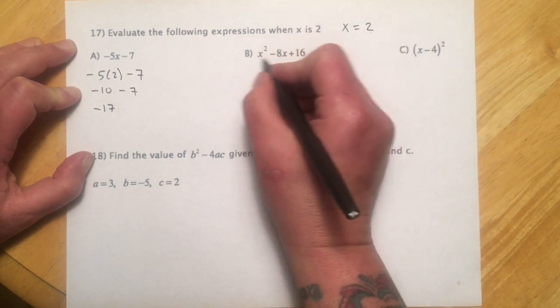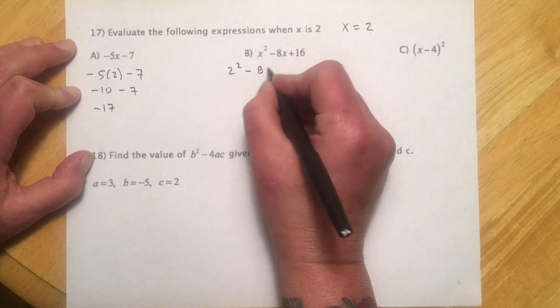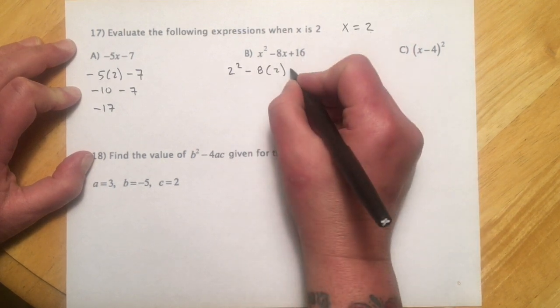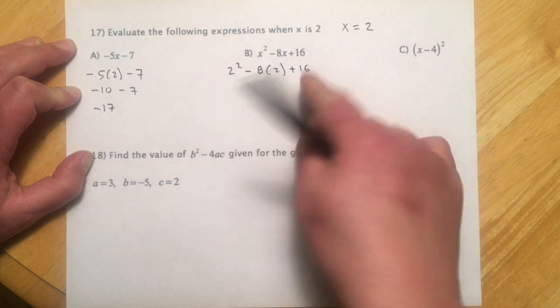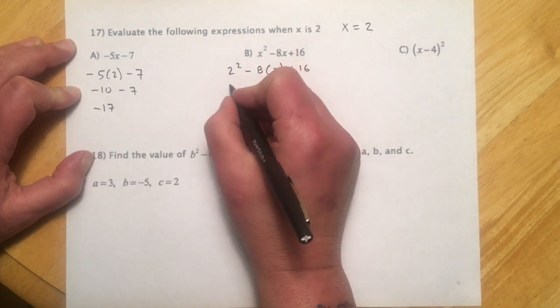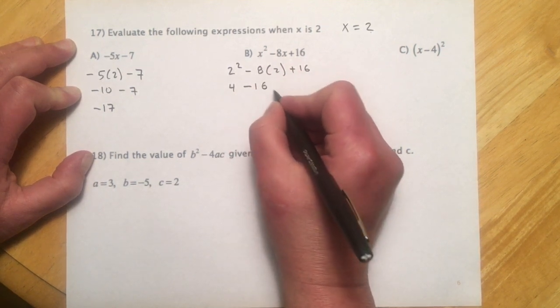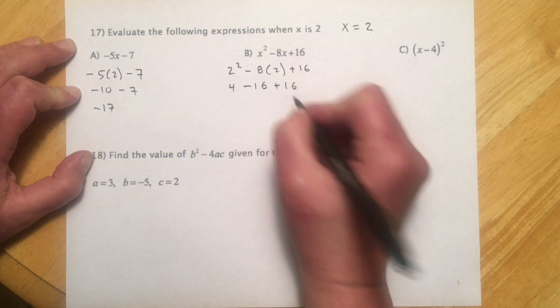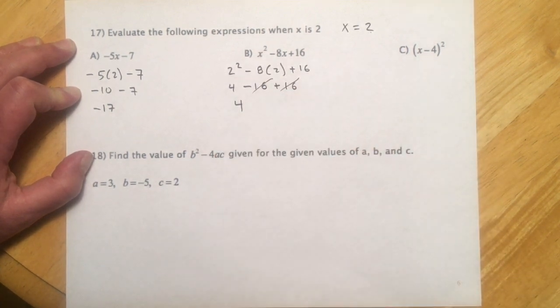Here, again, we'll just put the 2 in. So that will make a 2 squared minus 8 times 2 plus 16. And then just kind of do it using our PEMDAS that we looked at earlier. So 2 squared makes 4. And then 8 times 2 is a minus 16. And then plus 16. So minus 16 plus 16. That's gone. And I just get 4.